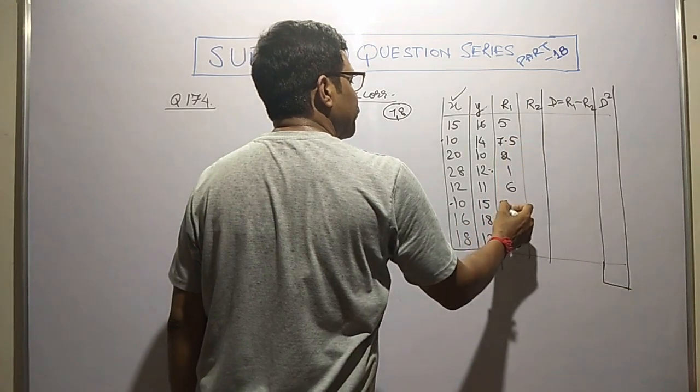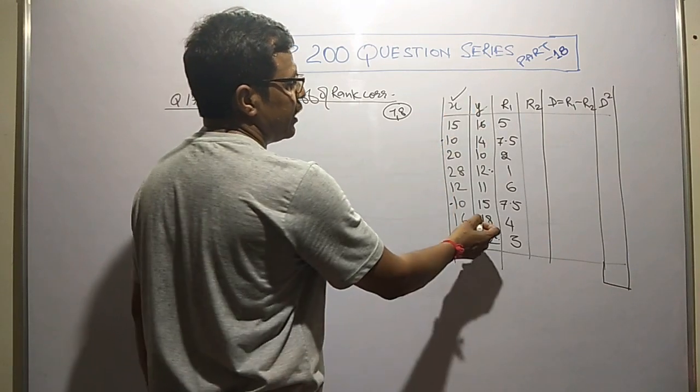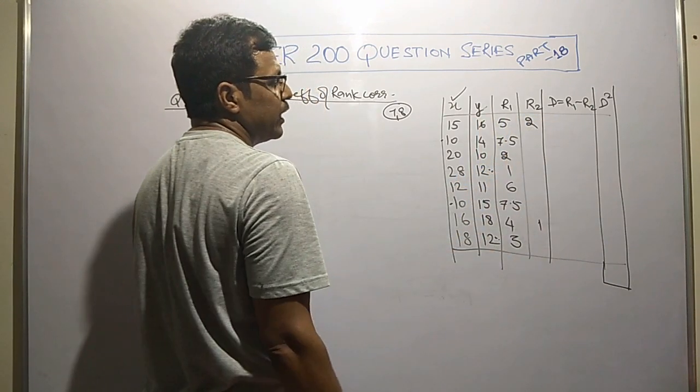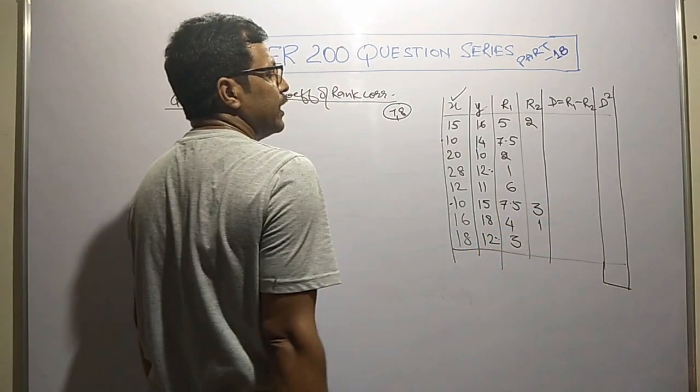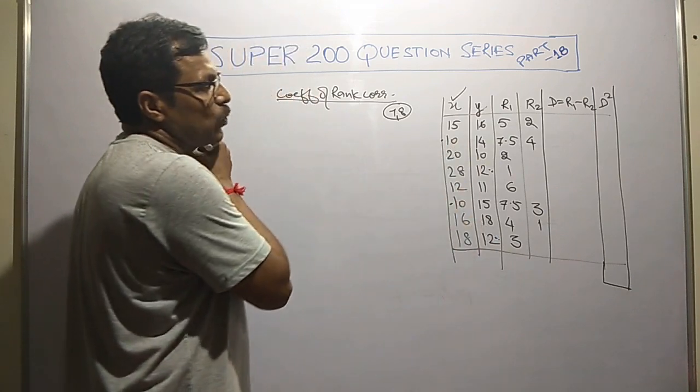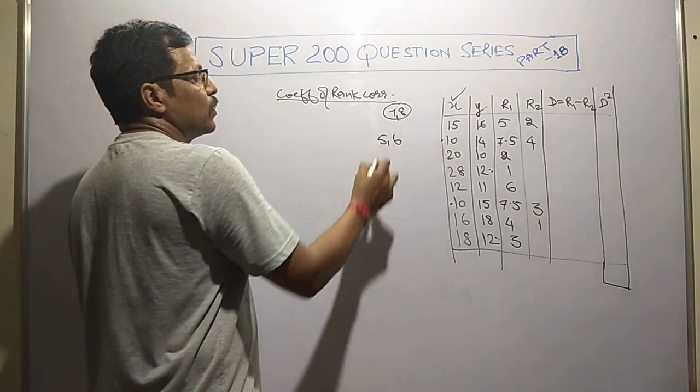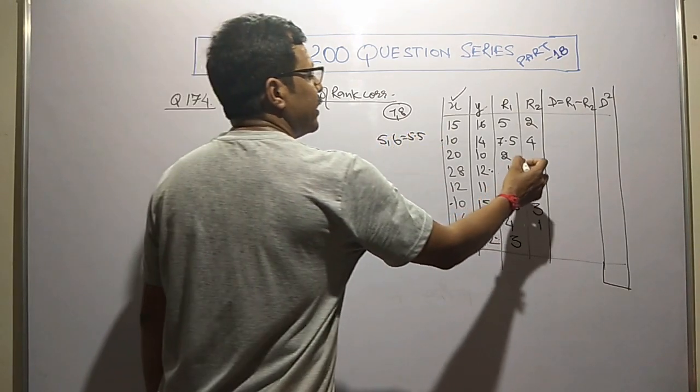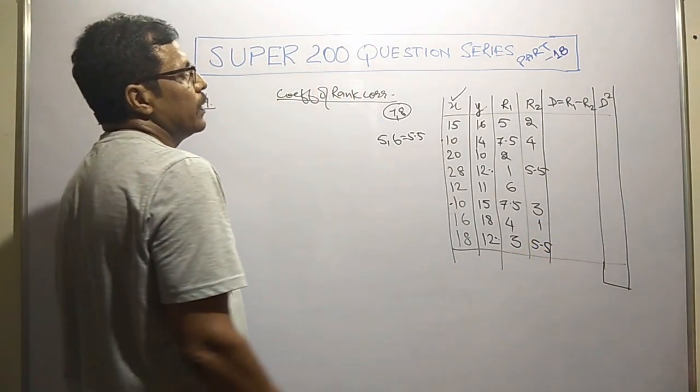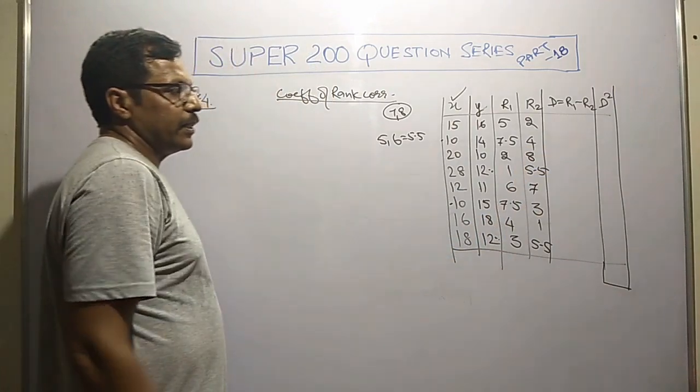For repeated values, if rank 7 and 8 should be given, we provide average of these two, which is 7.5 to both. Now for variate y, same way: highest value 18 rank 1, then 16 rank 2, 15 rank 3, 14 rank 4. After 14, the number 12 comes twice, so ranks 5 and 6 average to 5.5 each. After 12, next is 11 rank 7, then rank 8.